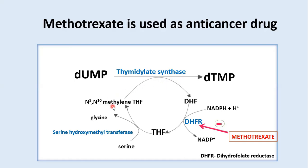N5, N10-methylene tetrahydrofolate is the methyl donor. The tetrahydrofolate is then regenerated by dihydrofolate reductase. Methotrexate is a structural analog of dihydrofolate — it competitively inhibits dihydrofolate reductase, the enzyme that reduces dihydrofolate to tetrahydrofolate.